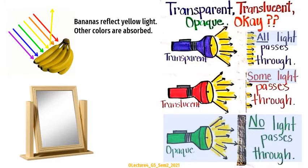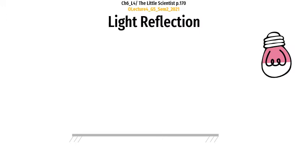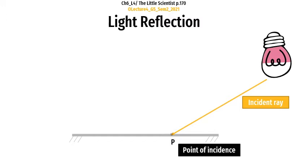Mirrors are a special kind of opaque objects that reflect light. They do not let light pass through them, but they reflect it — the light bounces off the smooth surface of the mirror. How does reflection happen? You need first a source of light. The source of light emits light. Here is the incident ray, which is the ray of light coming out of a source of light. The incident ray hits the mirror at a point called the point of incidence.